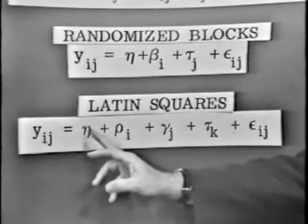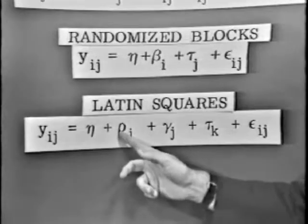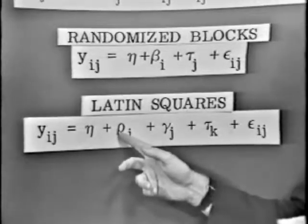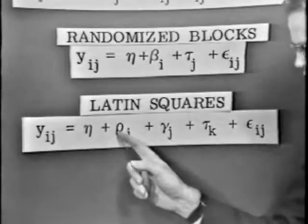Here, the observations are equal to the mean plus a row contribution. Now, that's the Greek letter rho, right? But I mean the row classification in our example are the various locations. So there'd be the row classification.